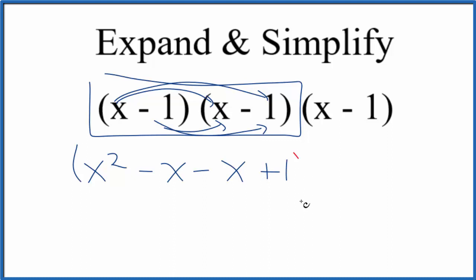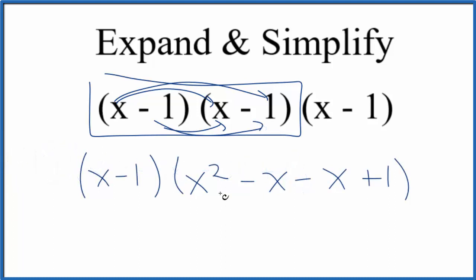So at this point, we have this right here, and now we can multiply x by everything, and then negative 1 by everything, and then we can combine terms that are similar, and we're done. We've expanded and simplified x minus 1 to the third. I like to move this out here to the front. That's just a little easier visually for me. So x times each one of these,